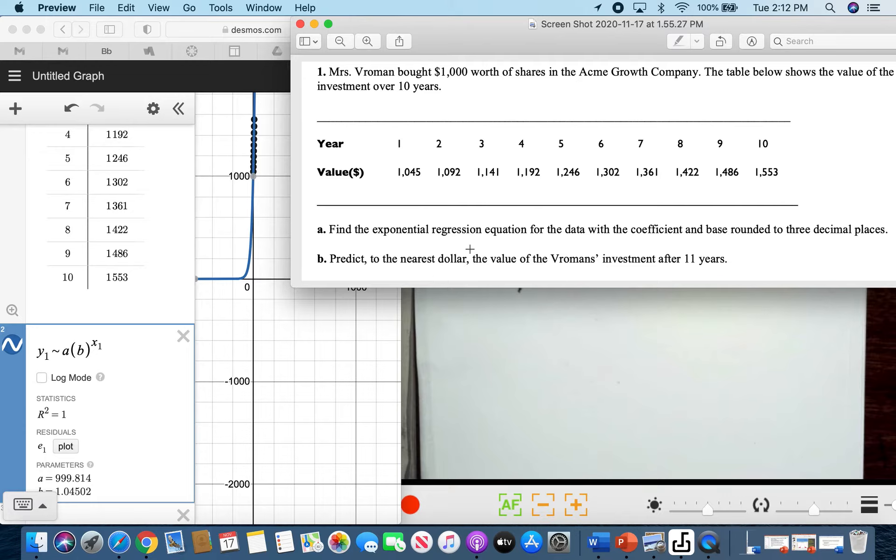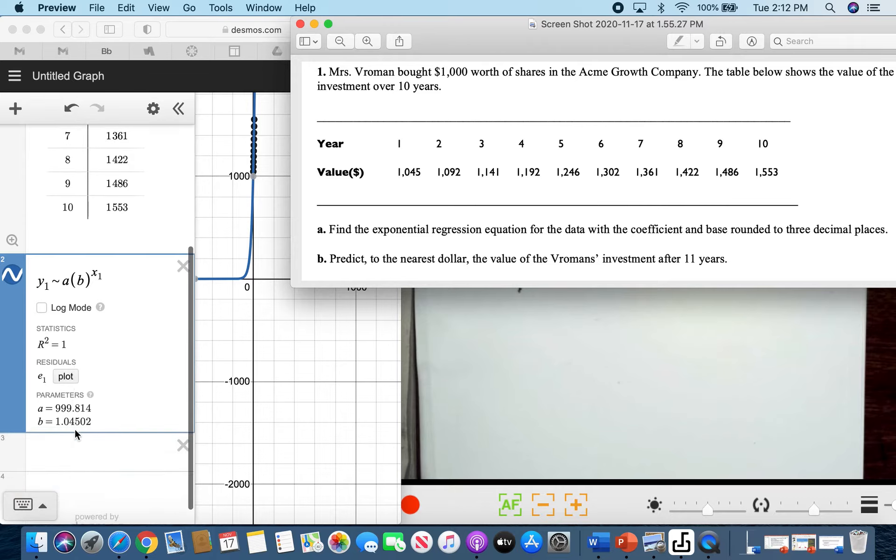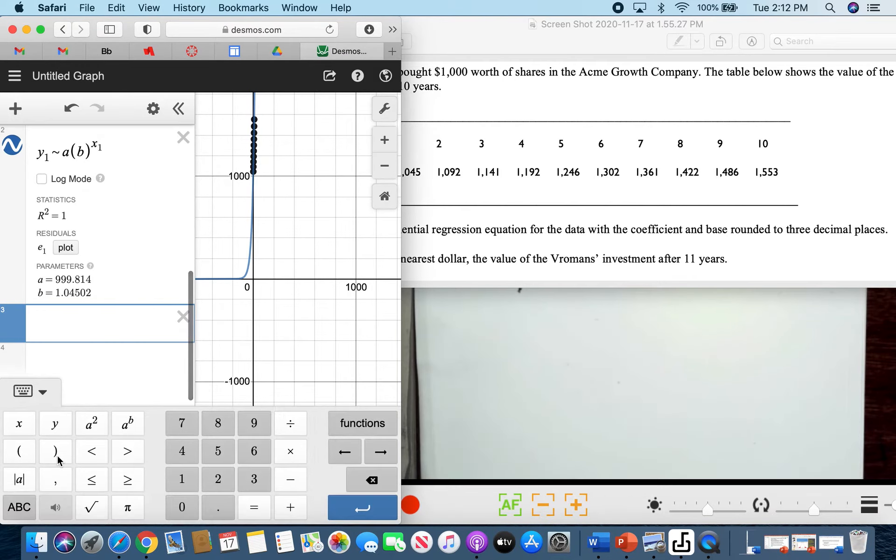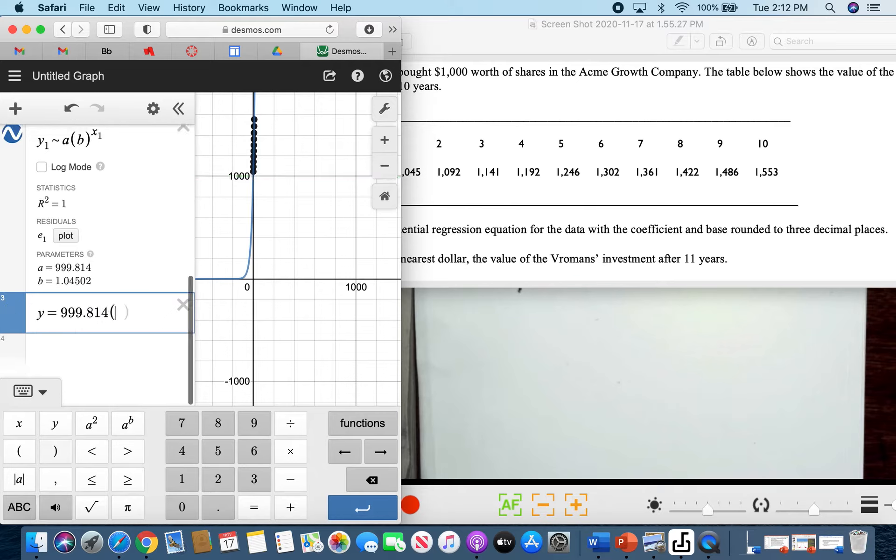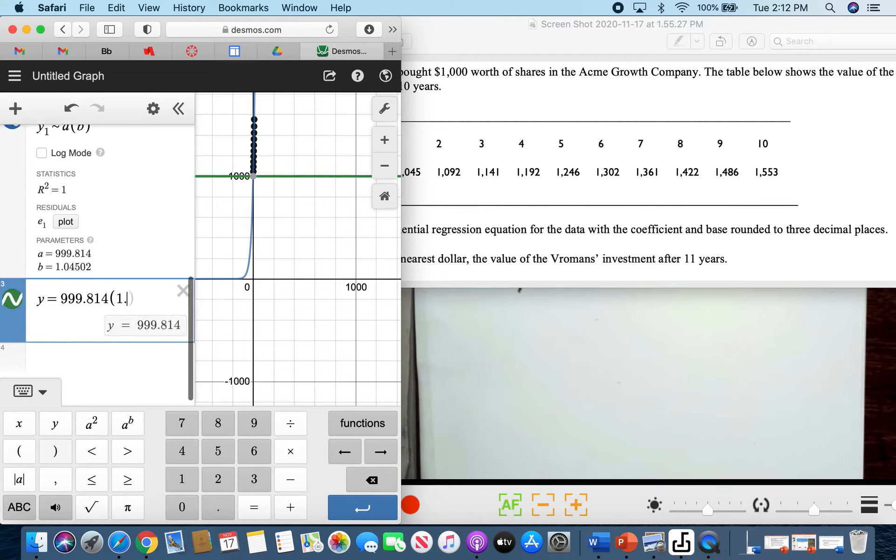We find the exponential regression for the data with coefficient and base rounded to the nearest three decimal places. So our equation is Y equals—it should cover our function—A is equivalent to 999.814, and our B is 1.045, raised to X.